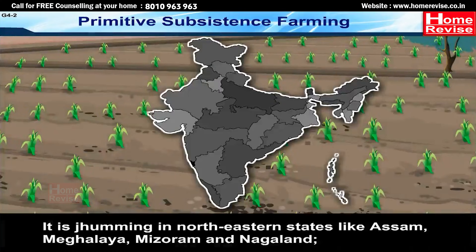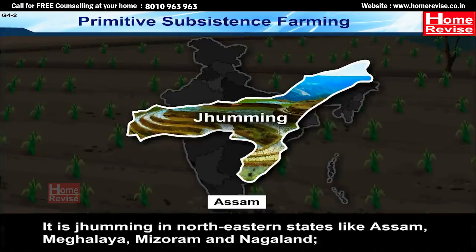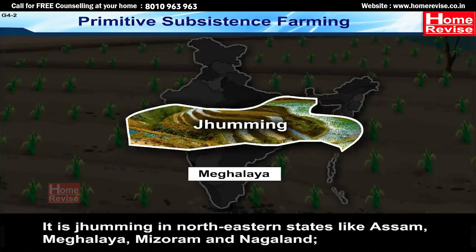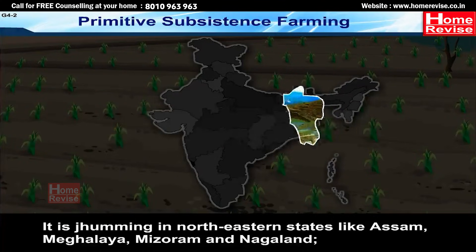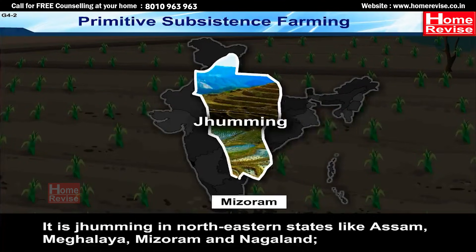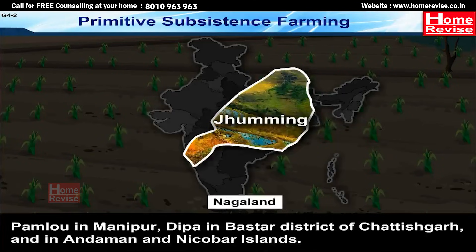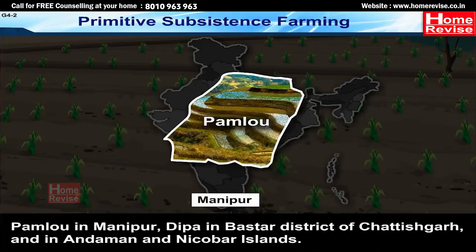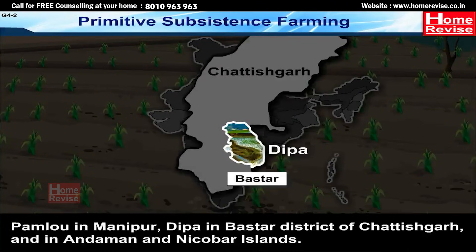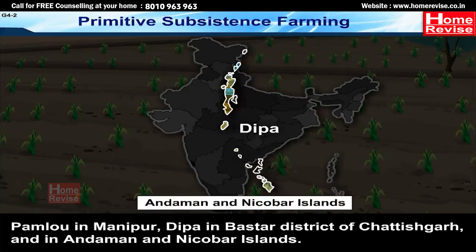It is called Jhuming in north-eastern states like Assam, Meghalaya, Mizoram and Nagaland; Pamlu in Manipur; Dipa in Bastar district of Chhattisgarh; and in Andaman and Nicobar Islands.